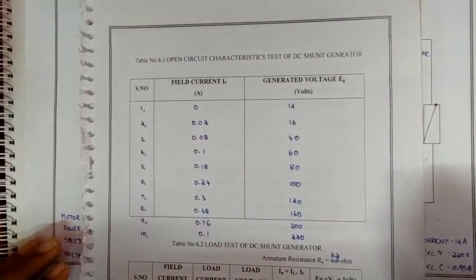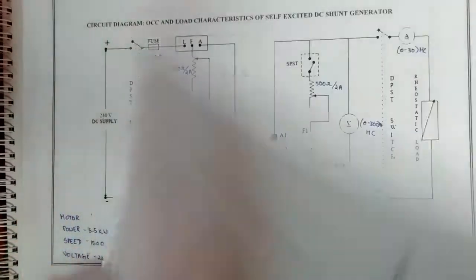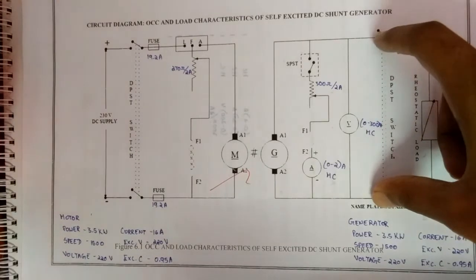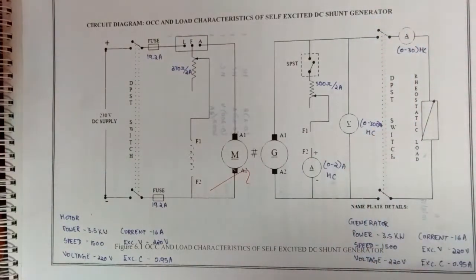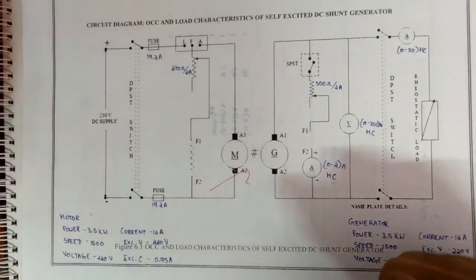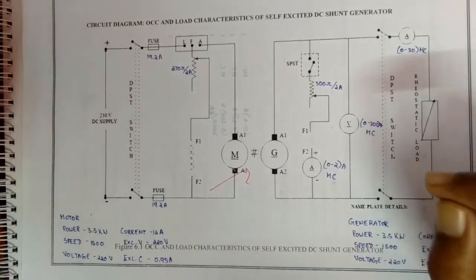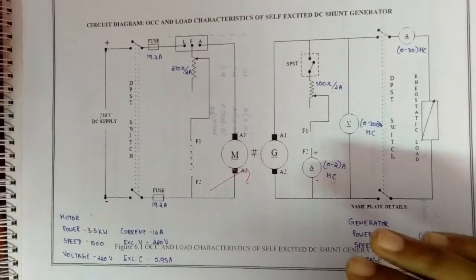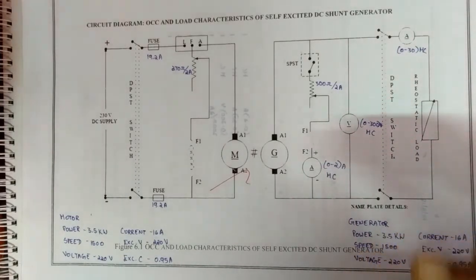Next, for the load test, the procedure will be: the DPSC switch 2 is closed when the rated voltage is reached. Then the load is applied using loading rheostat, and the load current IL, load voltage VL, and field current IF are noted down for various load currents. The same procedure is repeated up to the rated current.